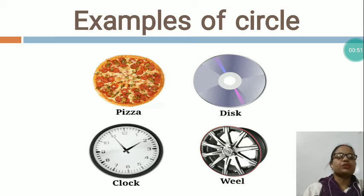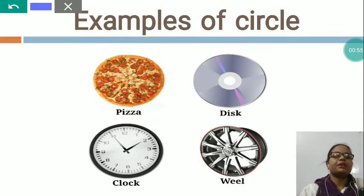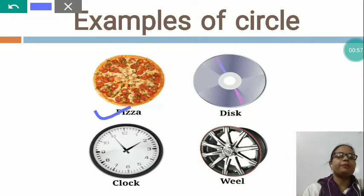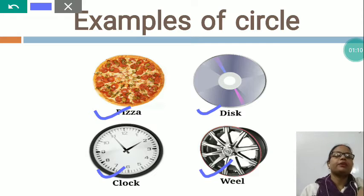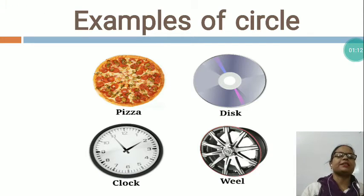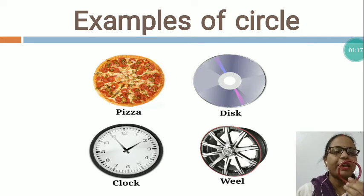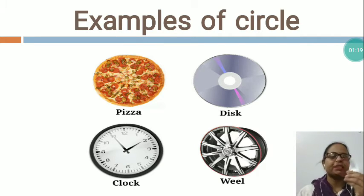Now you can see these all are the examples of circle. This is pizza — which shape? Circle shape. This is disc — which shape? Circle shape. This is clock — which shape? Circle shape. This is wheel — which shape? Circle shape. Now you can see in my hand also — what is this? This is a bangle. So which shape is this? This is circle shape.